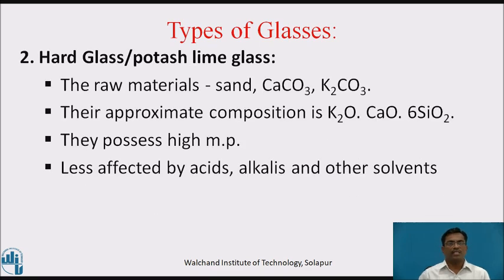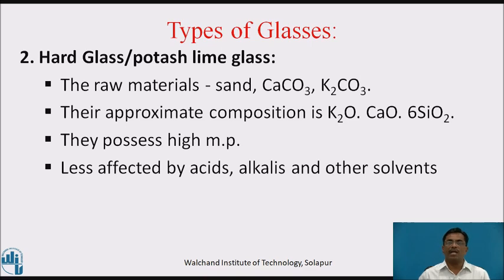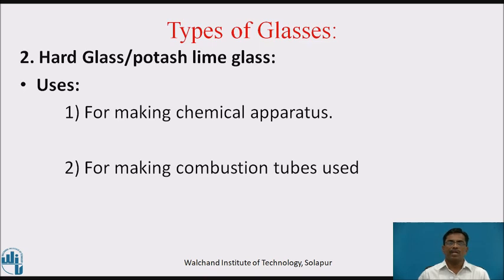Second type of glass is hard glass or potash lime glass. The raw materials used for the manufacture of hard glass are sand, calcium carbonate and potassium carbonate. Their approximate composition is K2O, CaO, 6SiO2. They possess a high melting point and are less affected by acids, alkalis and other solvents. Uses: it is used for making chemical apparatus and combustion tubes, etc.